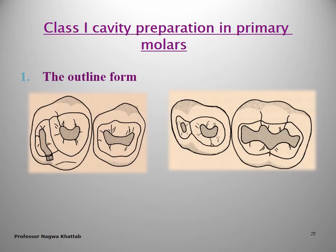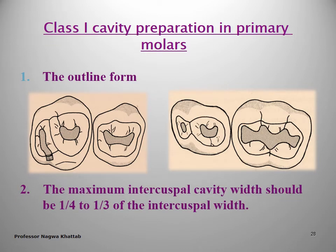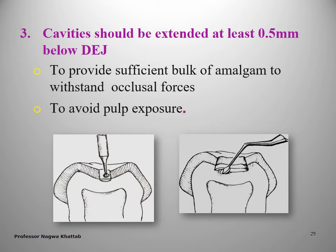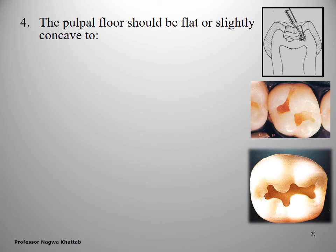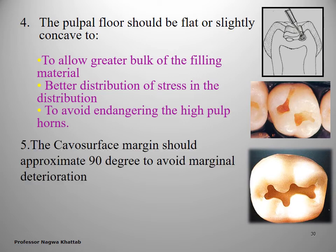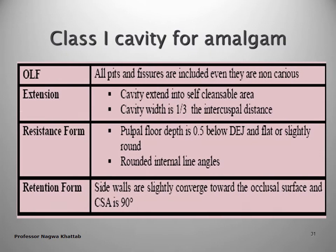For Class 1 cavity in primary molars, the outline should involve all the carious enamel and dentine. The maximum intercuspal cavity width should be no more than one-third of the intercuspal width. The cavity should extend just below the dentine-enamel junction, making it shallower than in permanent teeth, to provide sufficient bulk for amalgam to withstand occlusal force and avoid pulp exposure. The pulpal floor should be slightly concave or flat to allow greater bulk, better distribution of stress, and to avoid endangering the pulp. All cavosurface margins should be approximately 90 degrees and internal line angles should be rounded.